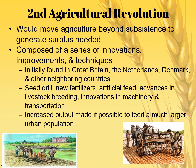The second agricultural revolution coincides with the Industrial Revolution, really getting started in the 1800s. It moved agriculture beyond subsistence to generate surplus, marking the beginning of large-scale commercial agriculture. It comprised innovations in technique, initially starting in Great Britain, the Netherlands, Denmark, and neighboring Western European countries — with inventions like the seed drill, new fertilizers, artificial feed, advances in livestock breeding, and innovations in machinery and transportation. Increased output fed a much larger urban population, and we also saw farm consolidation with the enclosure movement in the UK.